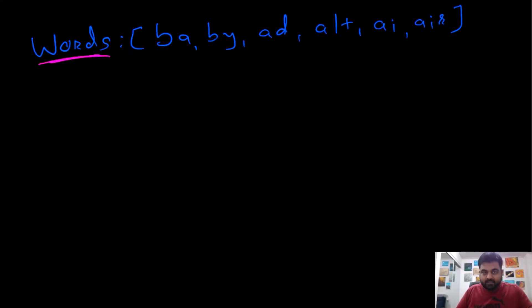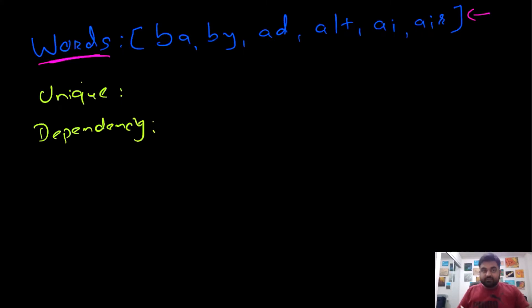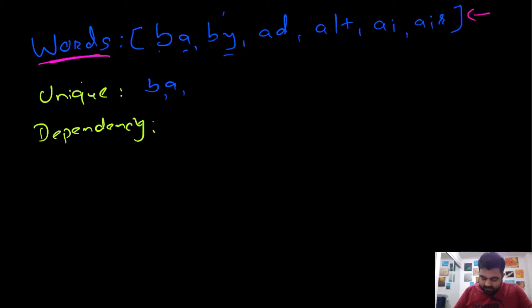Now let's work through a custom example with words given as alien dictionary input. To generate the solution, we need all unique characters and all dependencies between characters. The first two words give us B and A as unique characters, with the first differing characters being A and Y, so A comes before Y. Adding Y as a unique character.